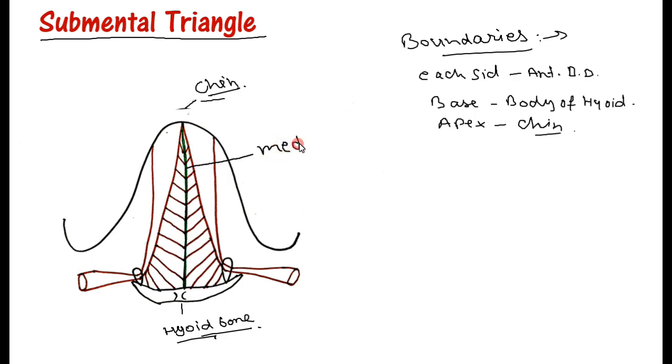Next we have the floor. As you know, in the midline we have the median raphe which will extend from the chin to the hyoid bone, and these muscle fibers will get attached to the median raphe. This is the mylohyoid muscle.